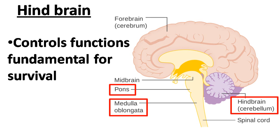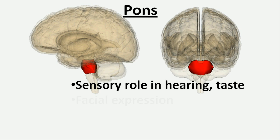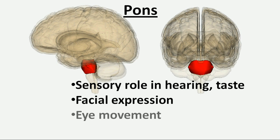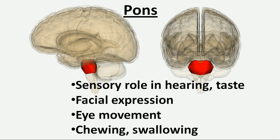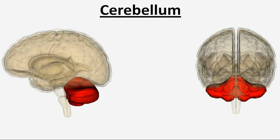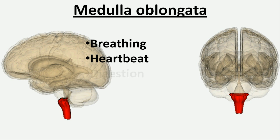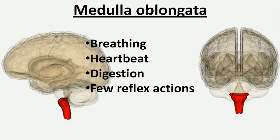The hindbrain controls functions fundamental for survival like heartbeat, breathing, sleep, digestion, vasomotor activities, and movement of limbs. It is composed of the pons, medulla oblongata, and cerebellum. The pons plays a sensory role in hearing, taste, and facial sensation, and a major role in movement of the eyes and chewing and swallowing. The cerebellum, which looks like two half cauliflowers below the cerebrum, coordinates all voluntary movements and maintains equilibrium. The medulla oblongata is responsible for basic life support functions like respiration and heartbeat, and also coordinates reflexes for swallowing, coughing, and vomiting.